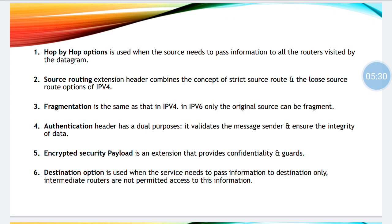Coming to ESP — Encrypted Security Payload — is an extension that provides confidentiality. Confidentiality means only the intended sender and receiver should be able to access the content of a message, and no unauthorized third person should be able to access it. Finally, destination option is used when the service needs to pass information to the destination only — no intermediate hop routers should get the information, only the intended receiver.